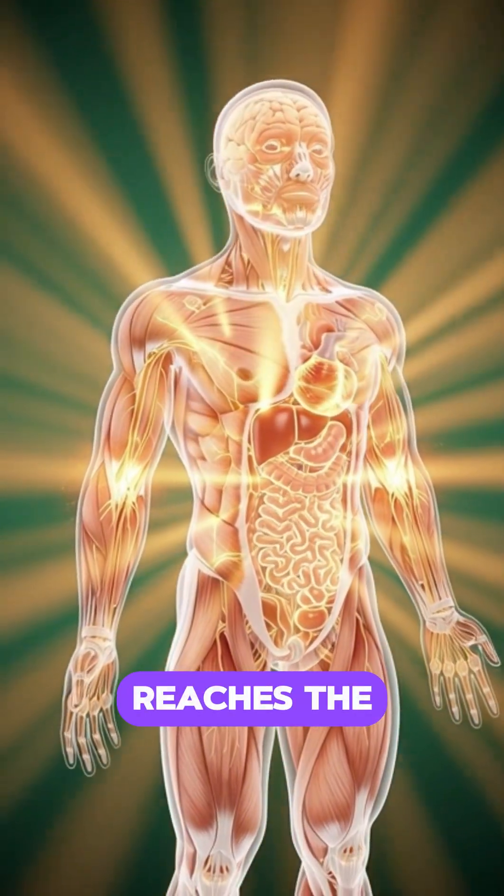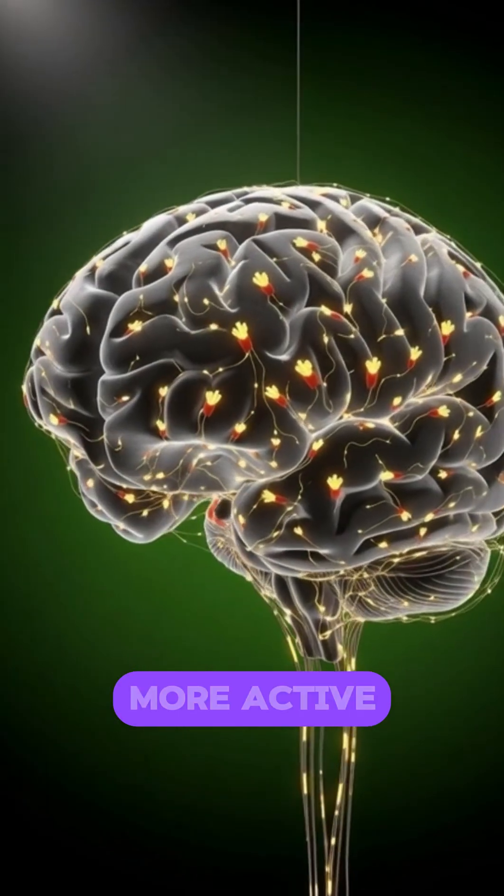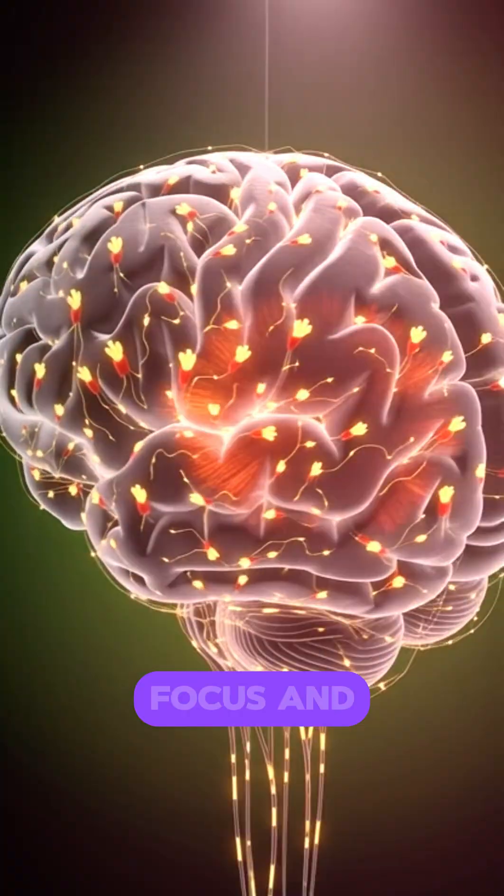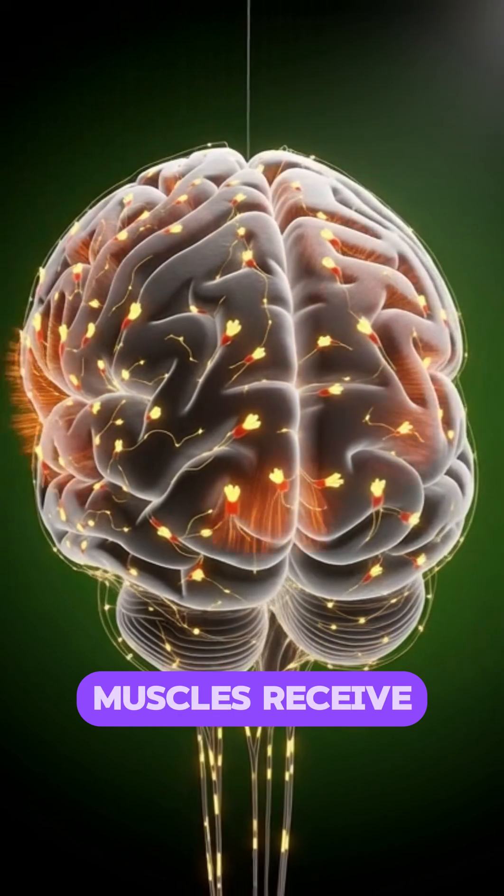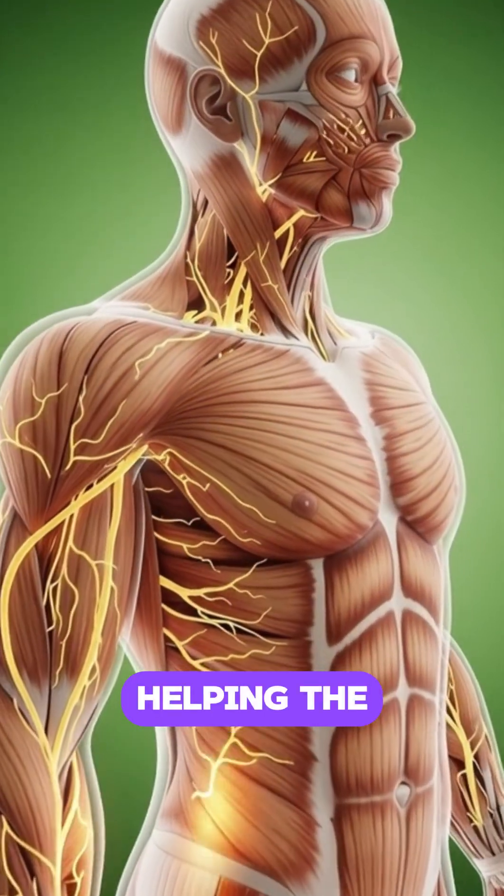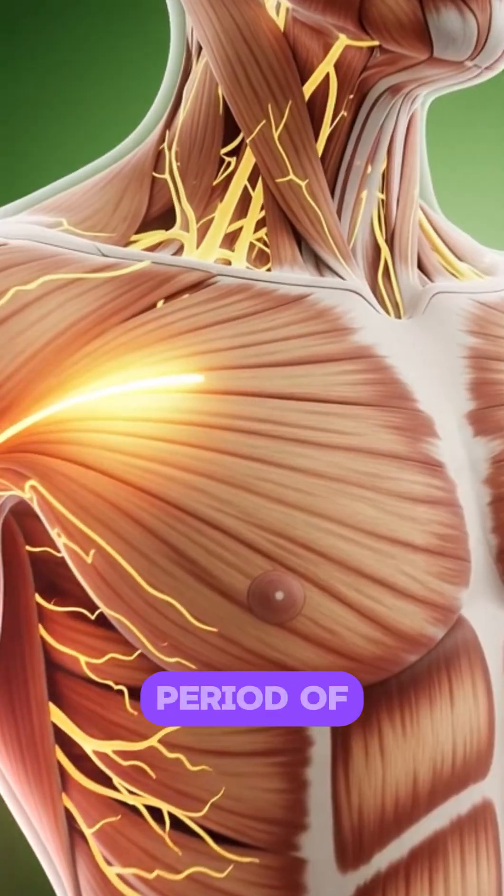When glucose reaches the brain, neurons become more active, briefly improving focus and alertness. Muscles receive fuel too, helping the body feel energized for a short period of time.